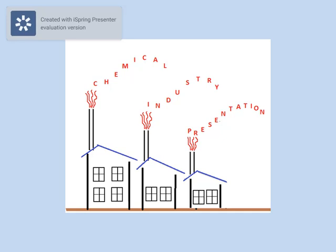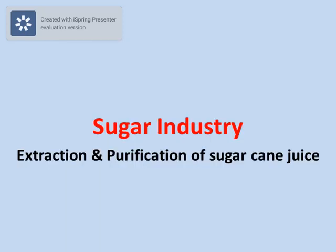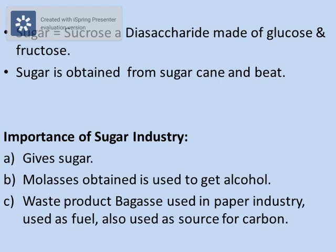Hello friends, welcome to Chemical Industry Presentation. Today we are going to see the sugar industry. In this we are going to see extraction and purification of sugarcane juice. First of all, we should know what sugar is. Sugar is a disaccharide known as sucrose. This sucrose is made up of glucose and fructose. Sugar is obtained from sugarcane and beet.